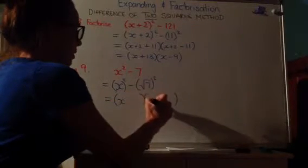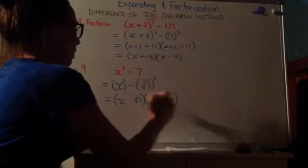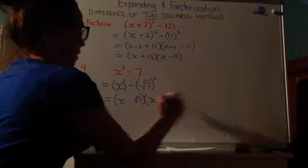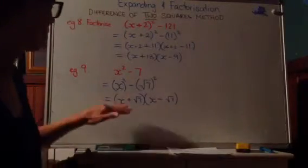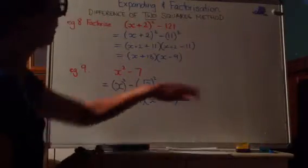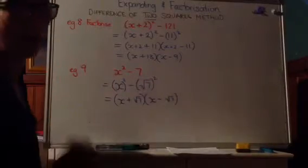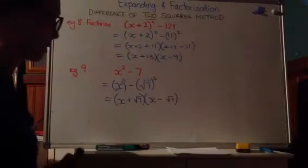So x in the front, root 7 in the back, and then plus and take. Now that's really kind of crazy. So x plus root 7 times x take root 7 are the factors of x squared subtract 7.